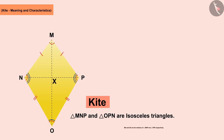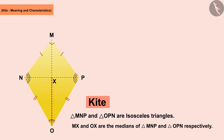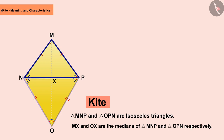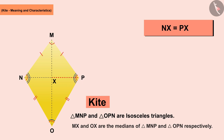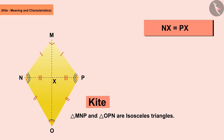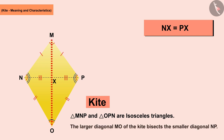MX and OX are the medians from vertices M and O of the triangles MNP and OPN respectively. With the help of this, we can say that the measurements of NX and PX are equal. This leads to the conclusion that the larger diagonal MO of the kite bisects the smaller diagonal NP.